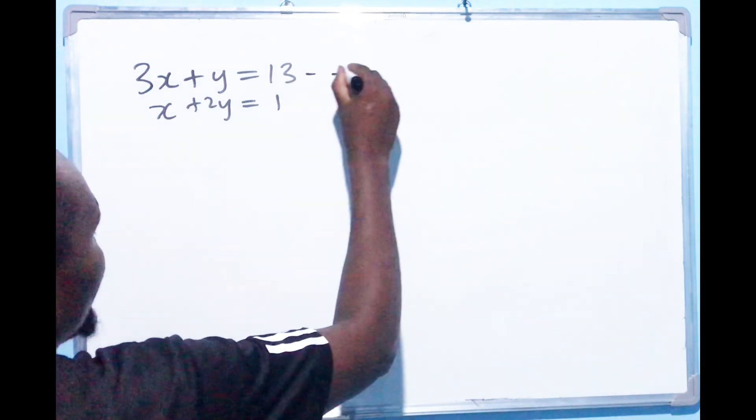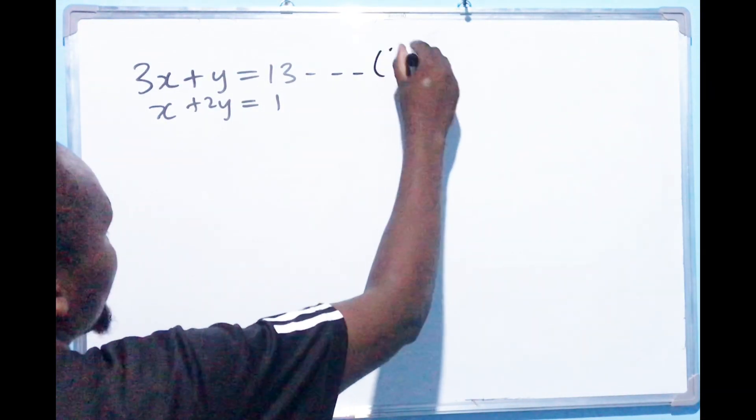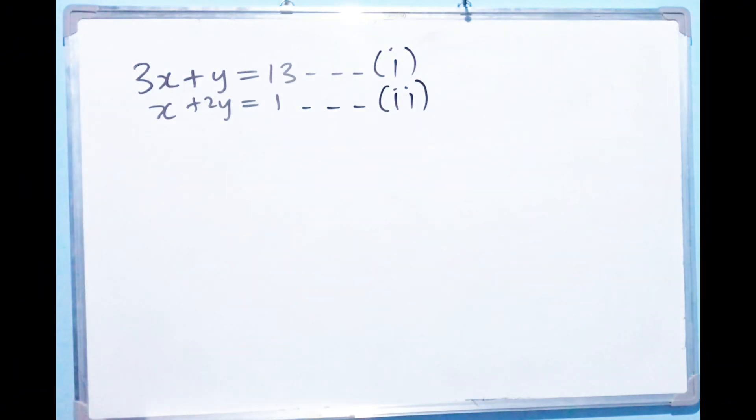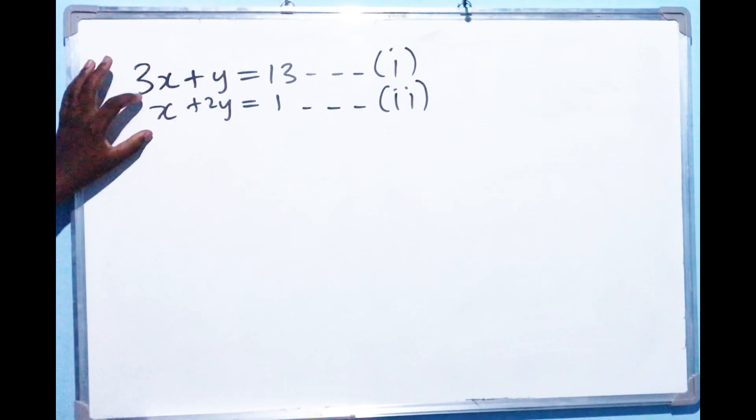In this case, we are going to use substitution method to find the value of X and Y. So to use substitution method we are going to give these equation names. So this would be equation 1 and this should be equation 2. So with that's done now we can actually pick equation name 2.